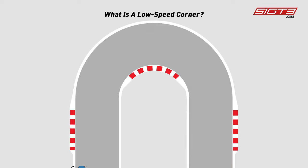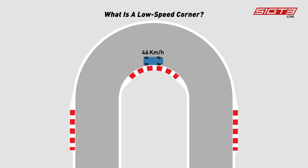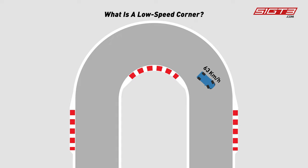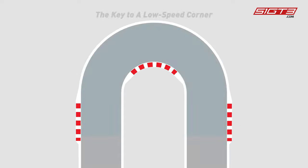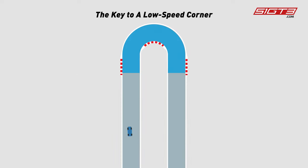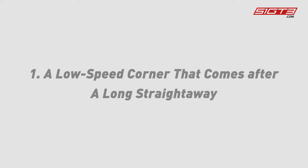A low-speed corner usually has a larger turning angle and lower average speed, making it difficult for drivers to take advantage of its cornering speed. However, we can still improve our lap time by using the low-speed corner to minimize the time used upon entering and exiting the corner. Let's talk about two of the most common low-speed corner types today.